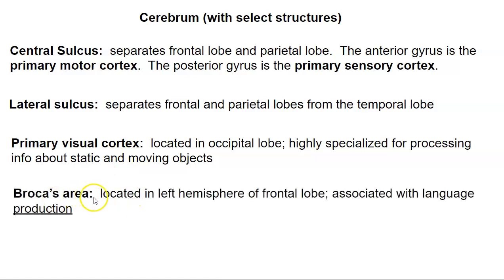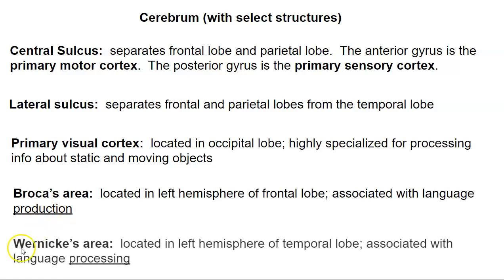We have two additional areas to know. Broca's area is associated with the formation of speech — speech production. It's located in the left hemisphere of the frontal lobe. Wernicke's area is associated with understanding speech — speech processing. It's located in the left hemisphere of the temporal lobe. So Broca's area is about making speech, while Wernicke's area is about understanding language.